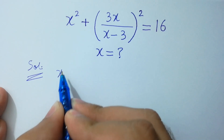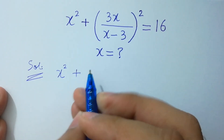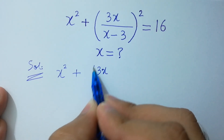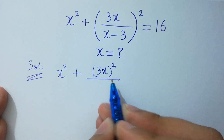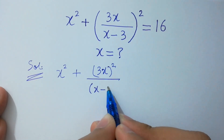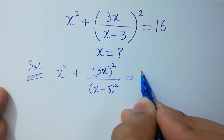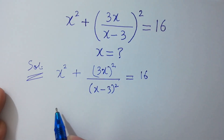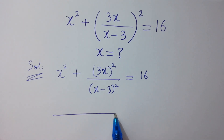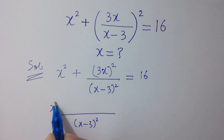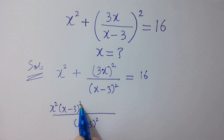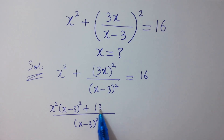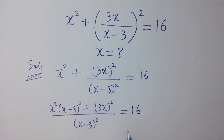It will be equal to (x² + 3x)² over (x - 3)² equals 16. Taking LCM (x - 3)², we get x²·(x - 3)² + (3x)² equal to 16. I hope you understood.